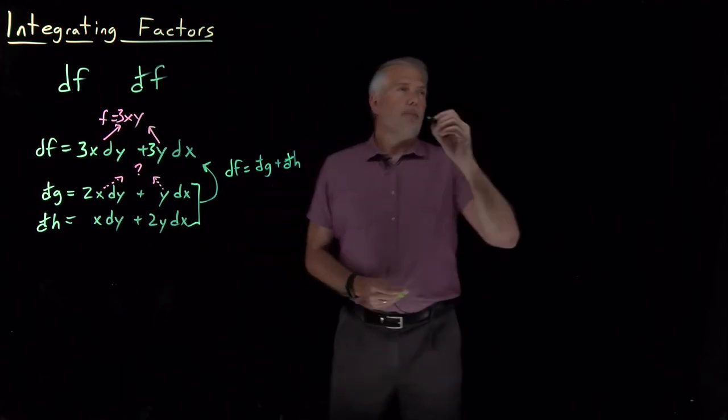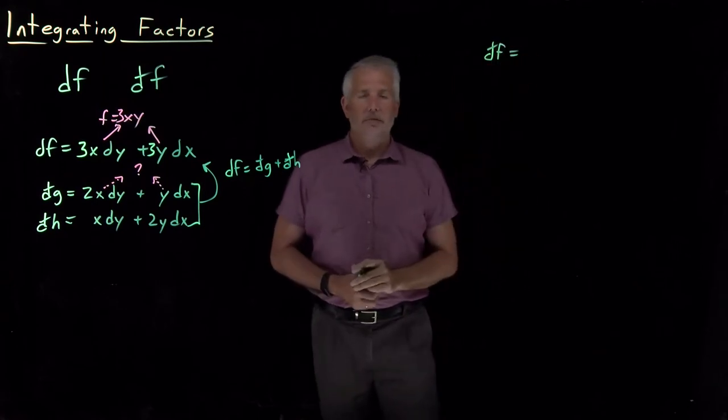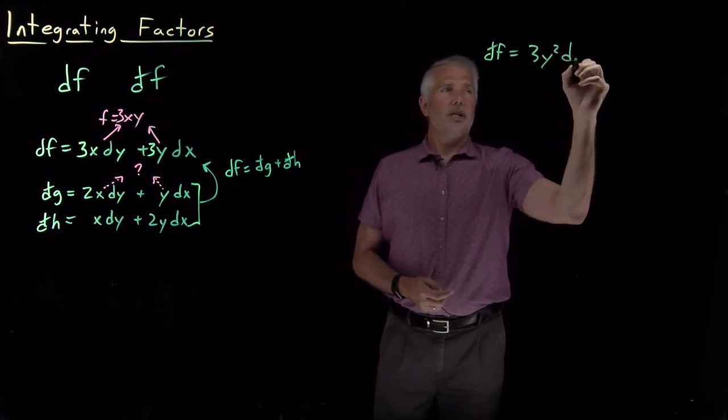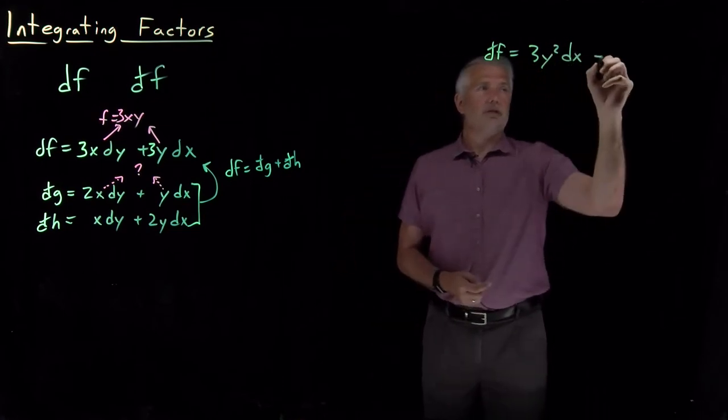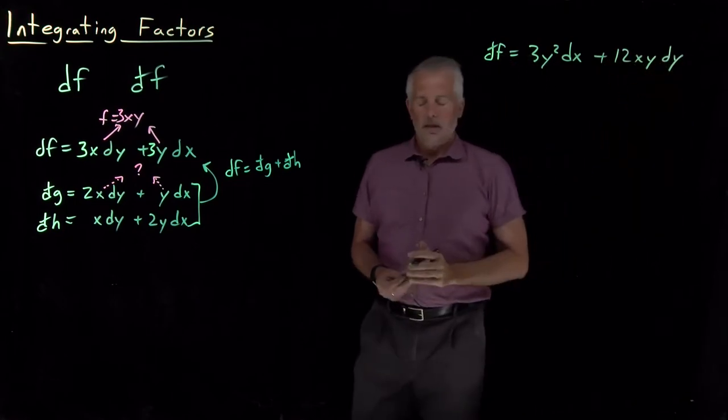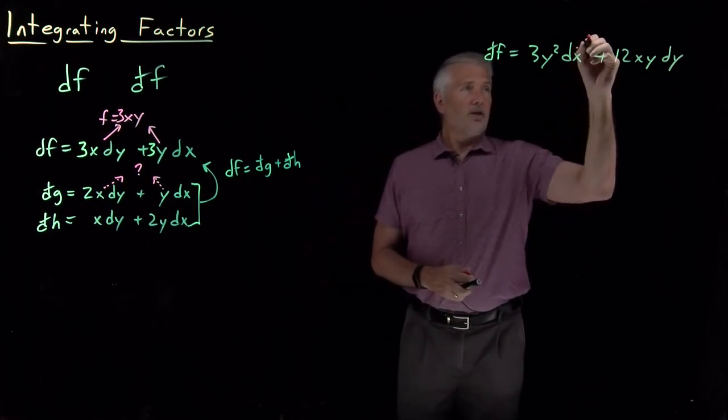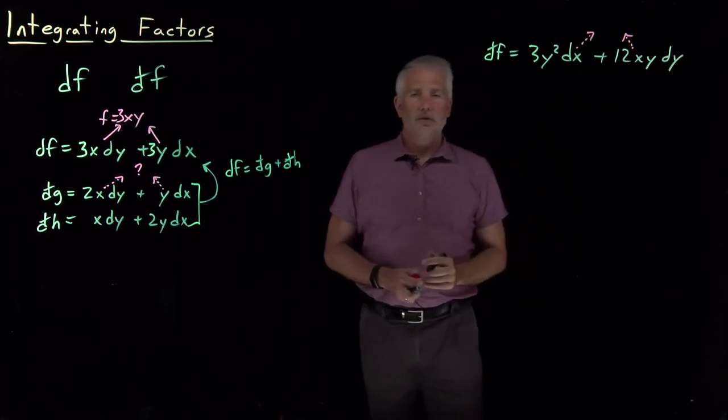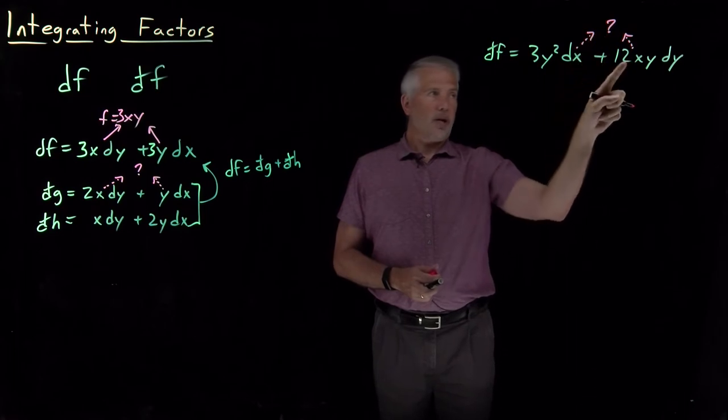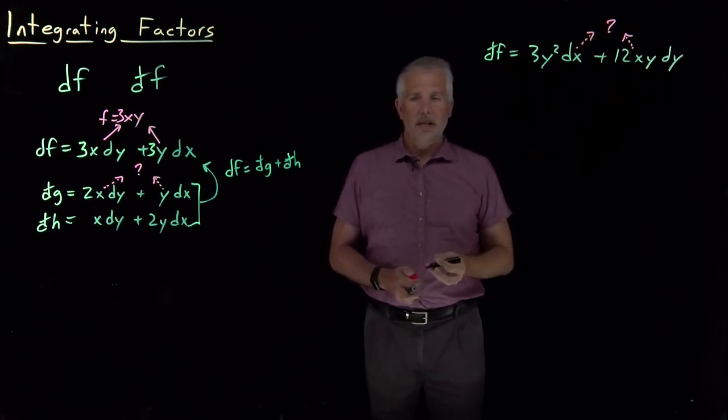Another one is, let's again start with an inexact differential. Let's use the same one that we've seen previously when we introduced the idea of an inexact differential. So that's an inexact differential again because there's no single function whose x derivative is 3y squared and whose y derivative is 12xy.